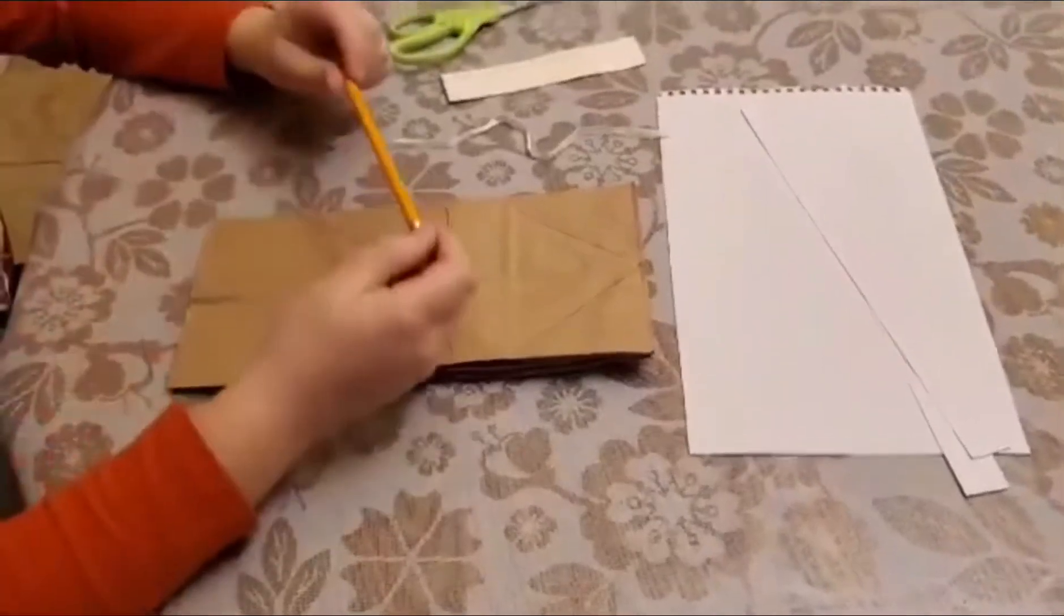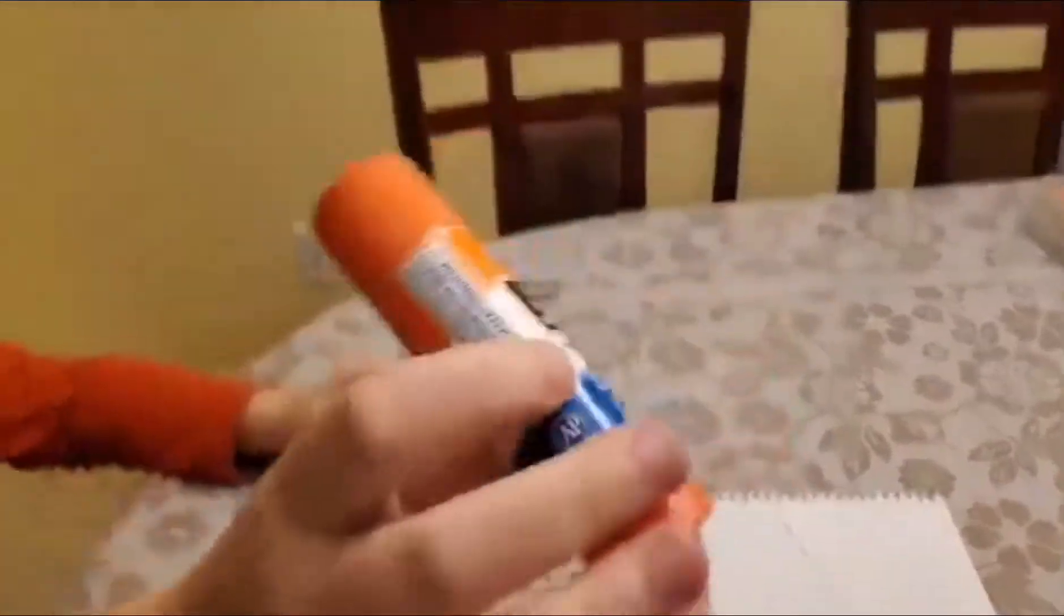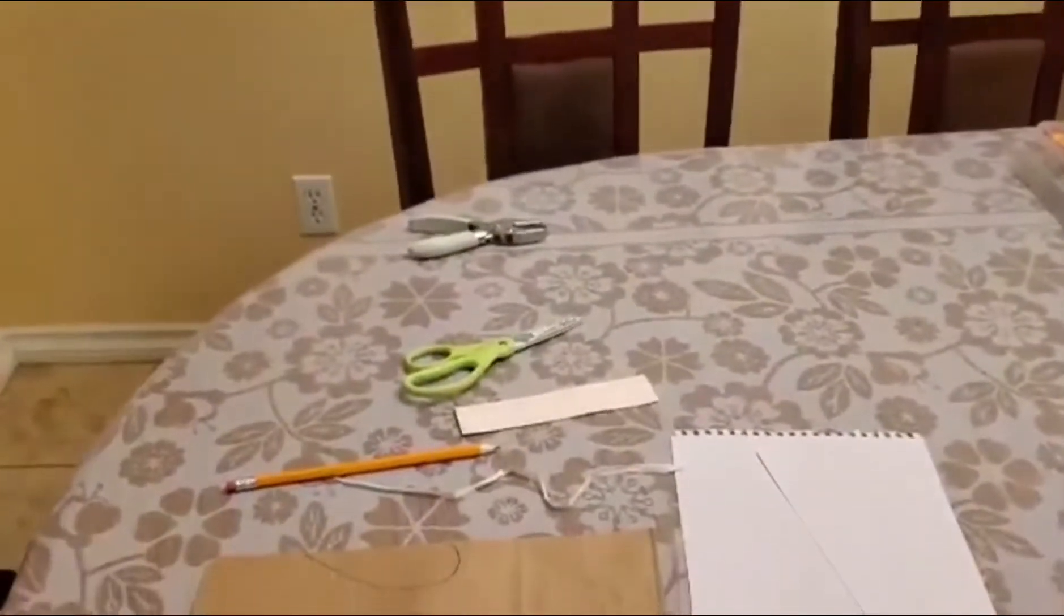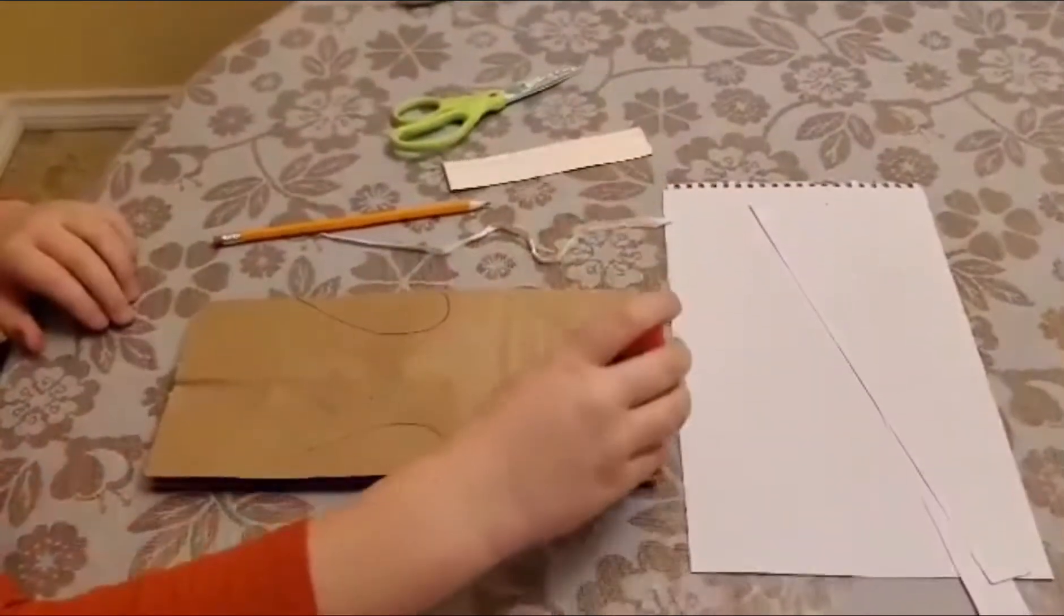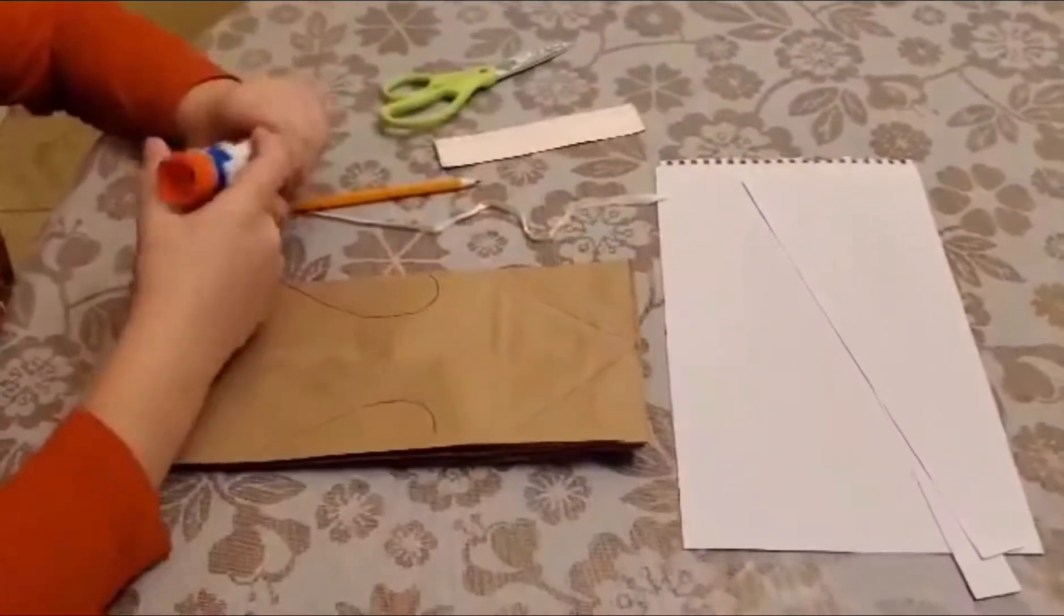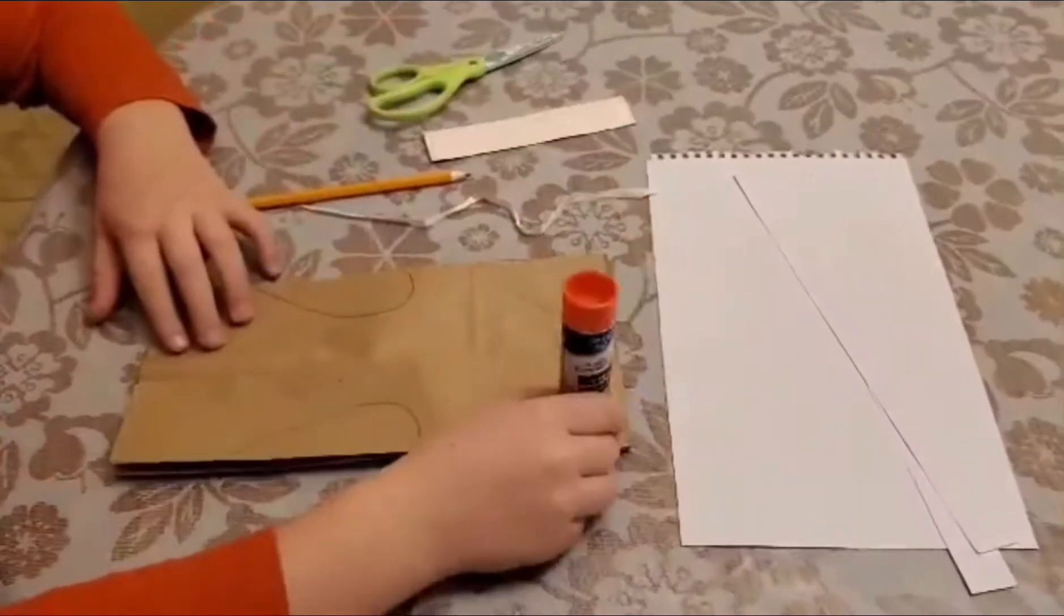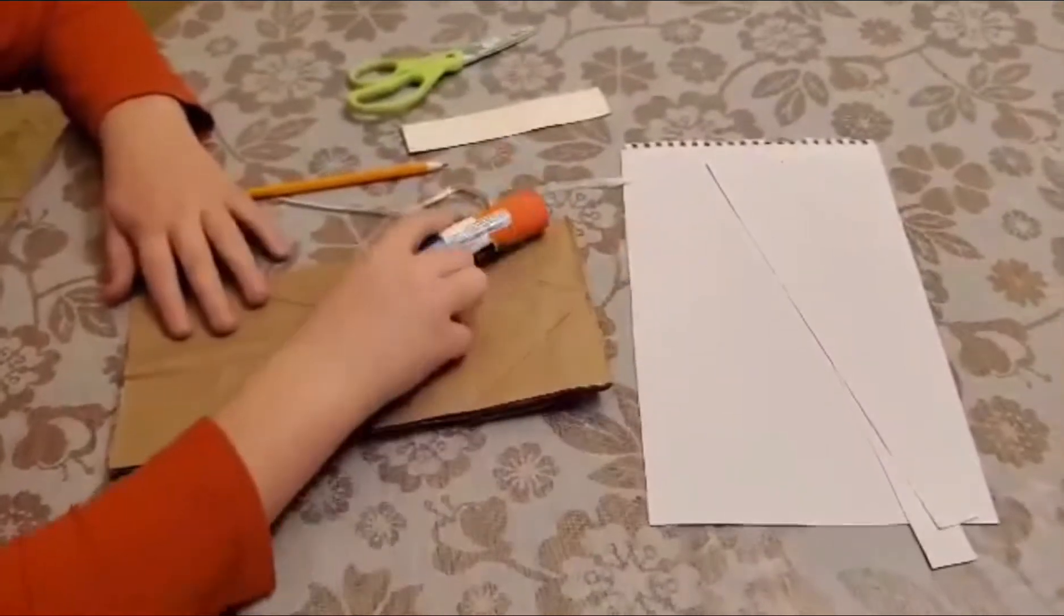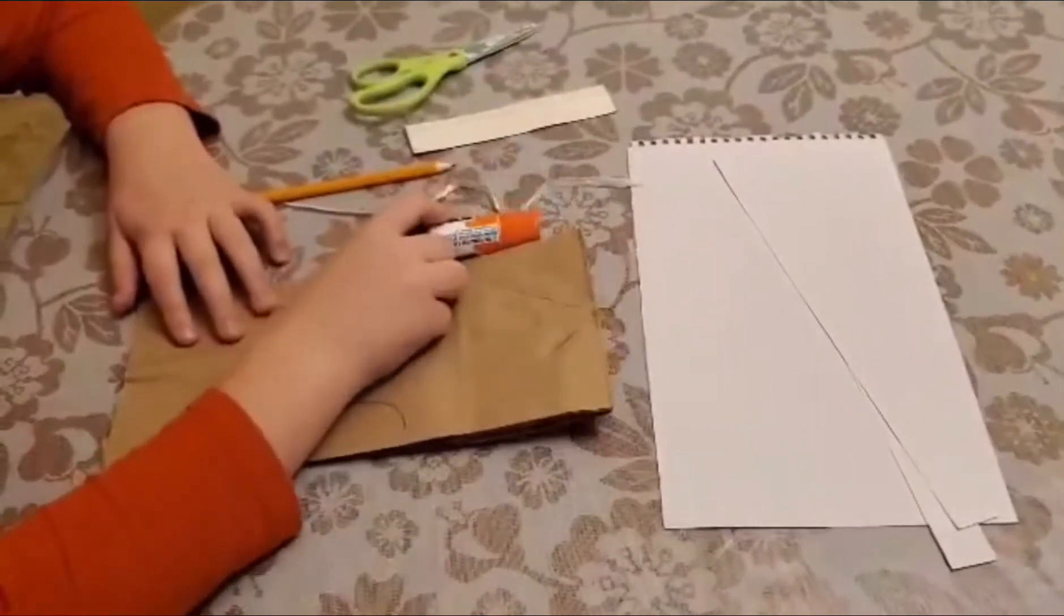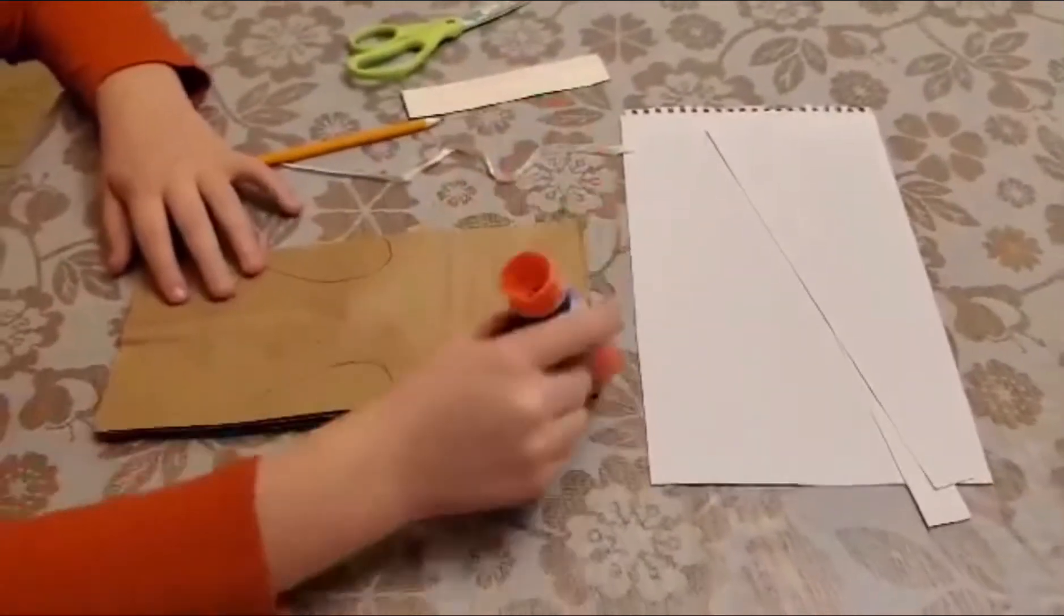And then after, you take the... I forgot what it's called, the thing, and you put a line of... you take all six bags, take one, and put a line of glue. Then take another one and put the glue as a line. And then when you glue all of them together.